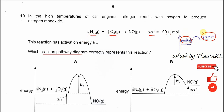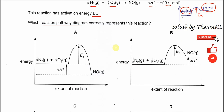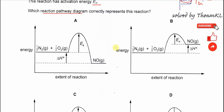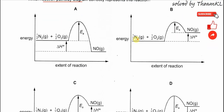So the diagram must look something like this. The second thing you need to know is what the activation energy (EA) is. Because it's endothermic, the EA is measured from the reactants — not to the products — but up to the peak. This is the EA. This is the basic understanding needed to get this reaction pathway.